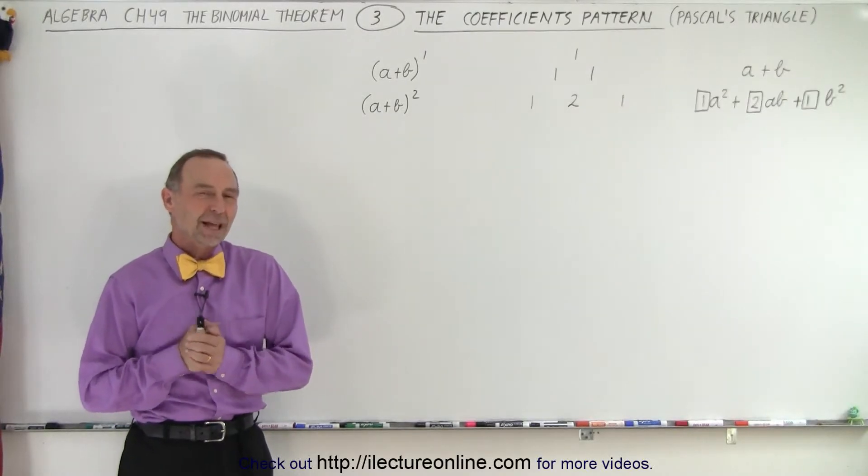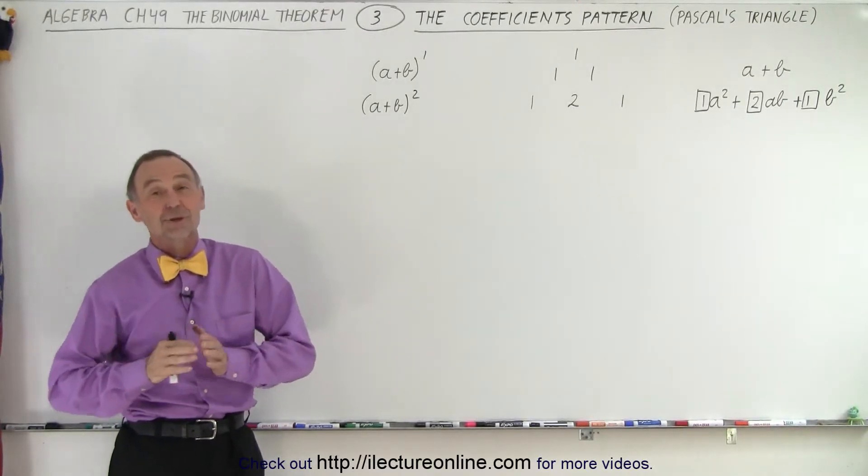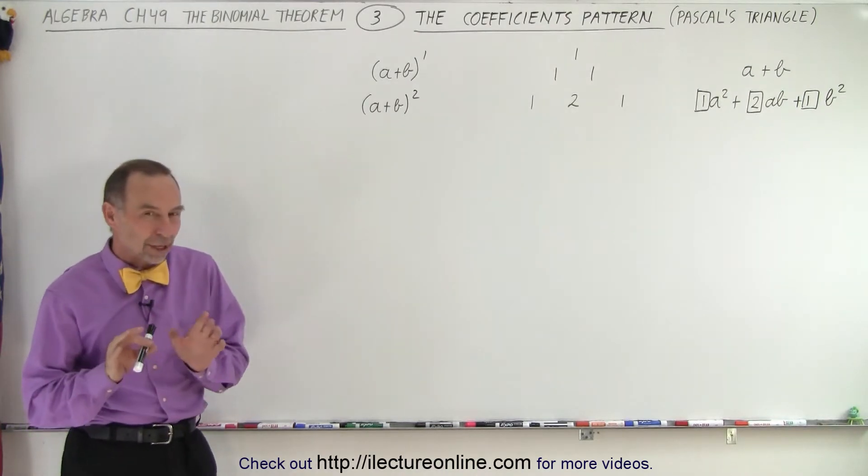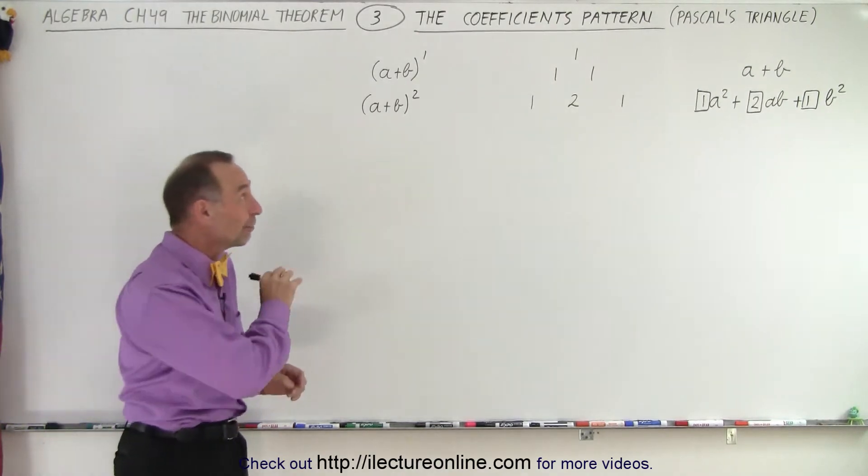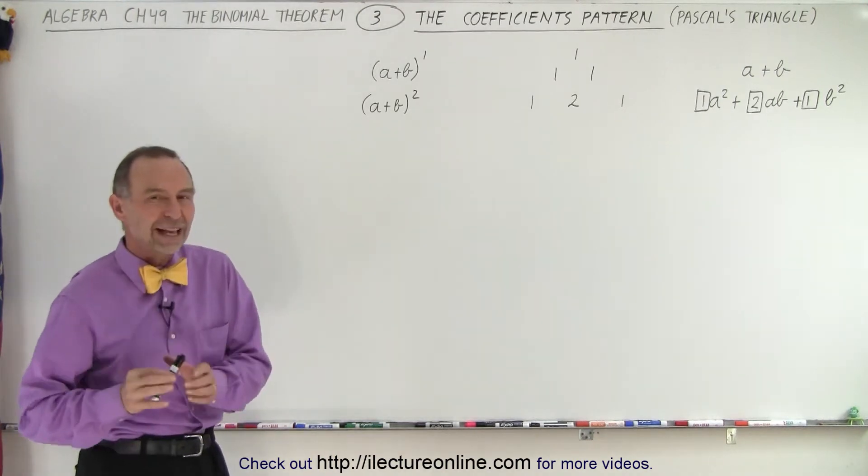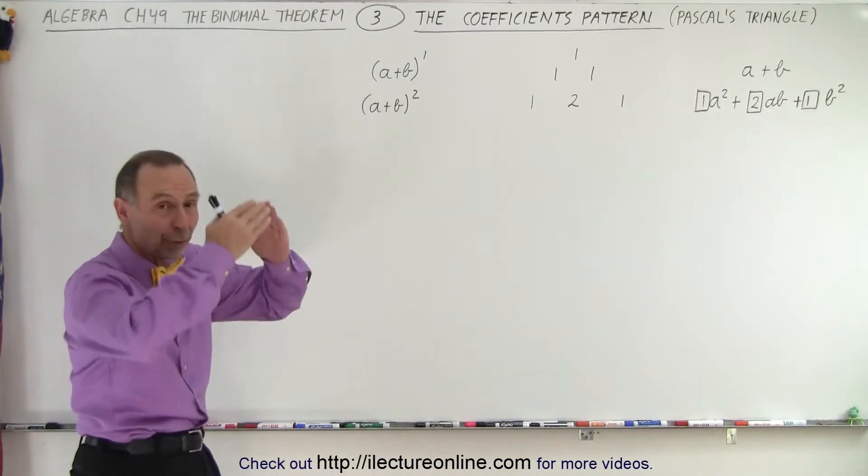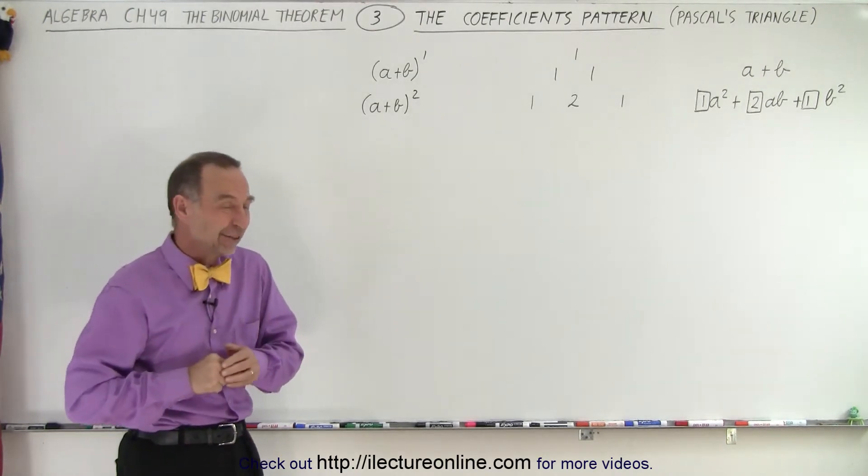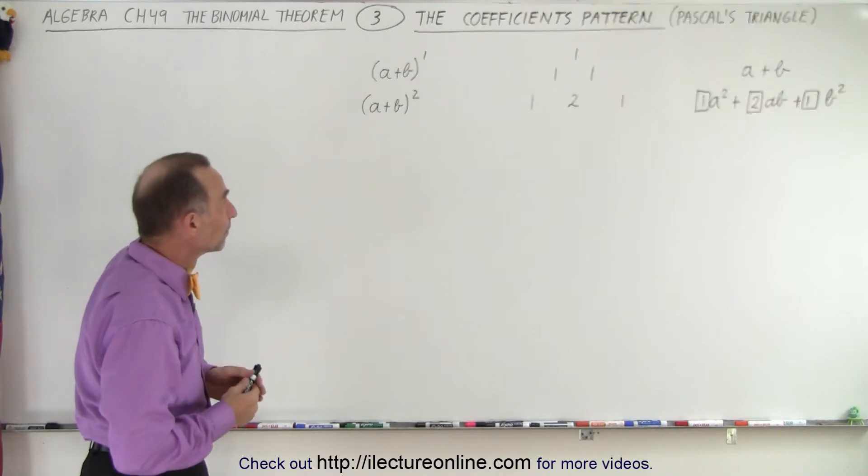Welcome to ElectronLine. Now let's concentrate on the numerical coefficients in our binomial expansion. When we talk about the pattern that we see in the coefficients, it's called Pascal's triangle because it forms a triangle with numbers, and I presume that Pascal is the one that figured this out. So, what does it look like?